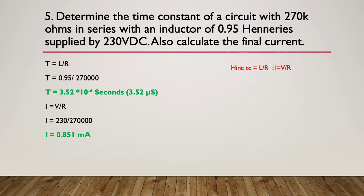So here's the answer. The first one: time constant, or tau, is equal to L divided by R. So simply our 0.95 divided by 270,000, remember it's times 10 to the 3, and that comes out at 3.5 times 10 to the minus 6, or we'd round that to 3.52 microseconds.